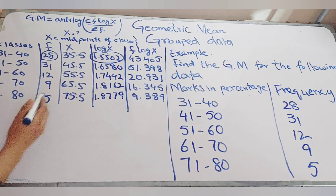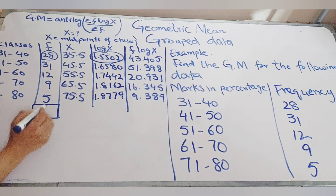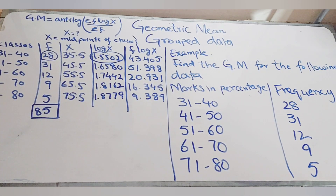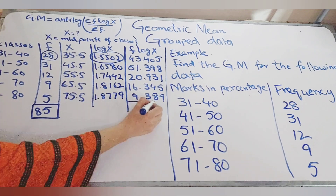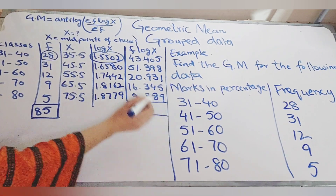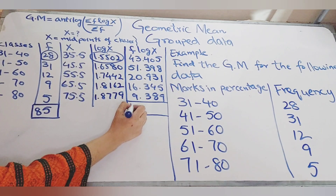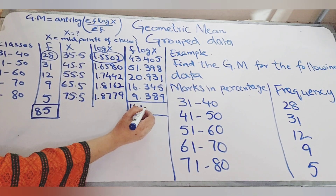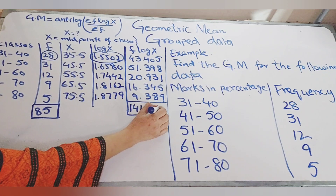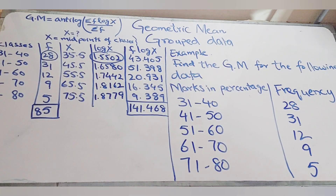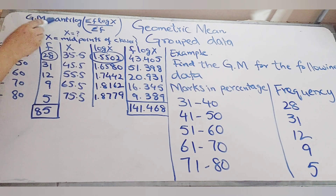Now we sum both columns as required by the formula. Adding the frequency column: 28 + 31 + 12 + 9 + 5 gives summation F = 85. Adding all F·log(X) values gives summation F·log(X) = 141.468.